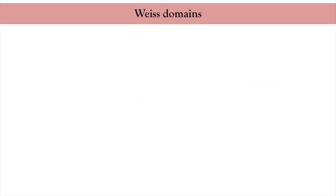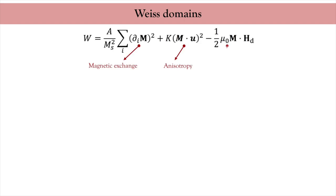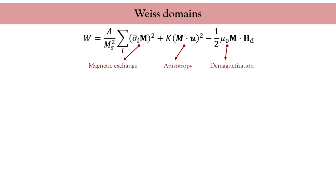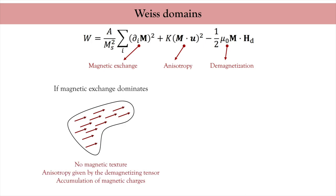To understand how inhomogeneous magnetic domains emerge, let us consider the following macromagnetic energy with magnetic exchange, anisotropy, and demagnetization. If the exchange is much larger than the other energy terms, the magnetic moments of a given magnetic object remain aligned with each other and no magnetic texture can be stabilized.